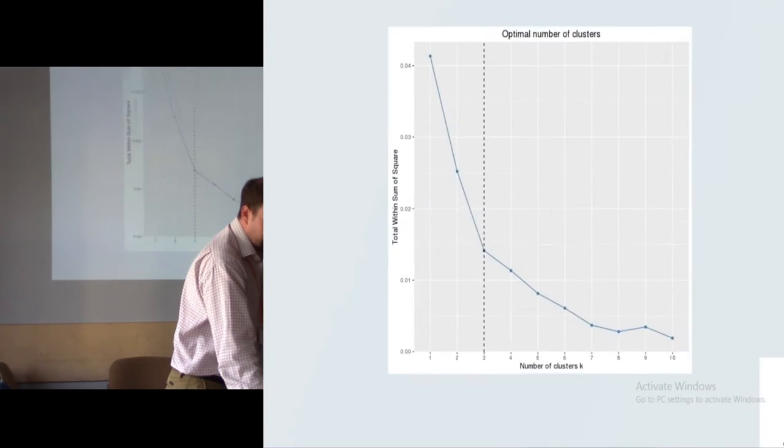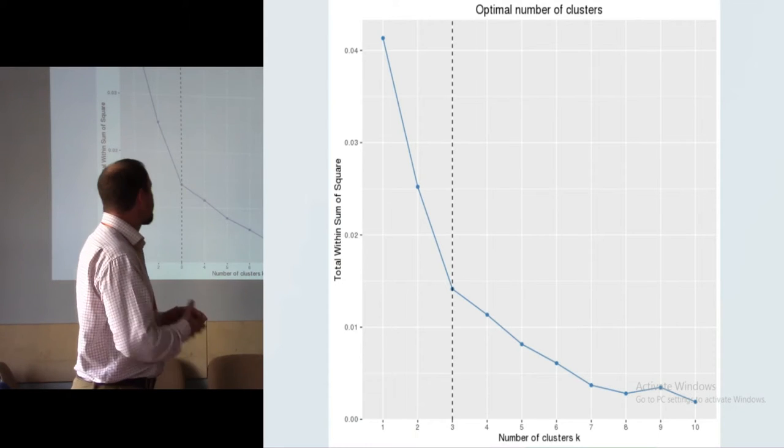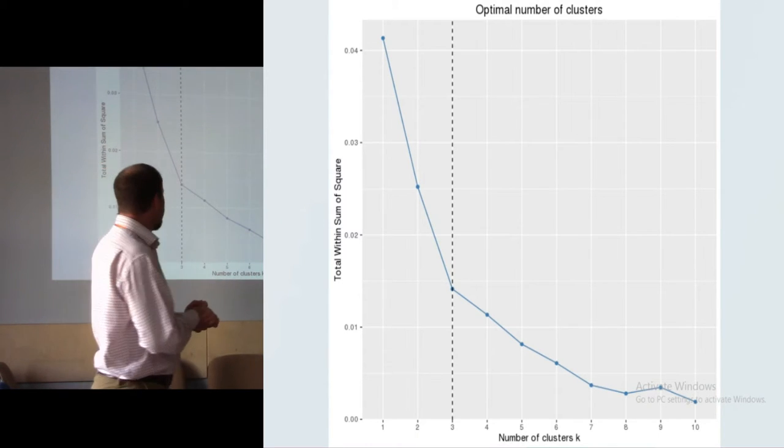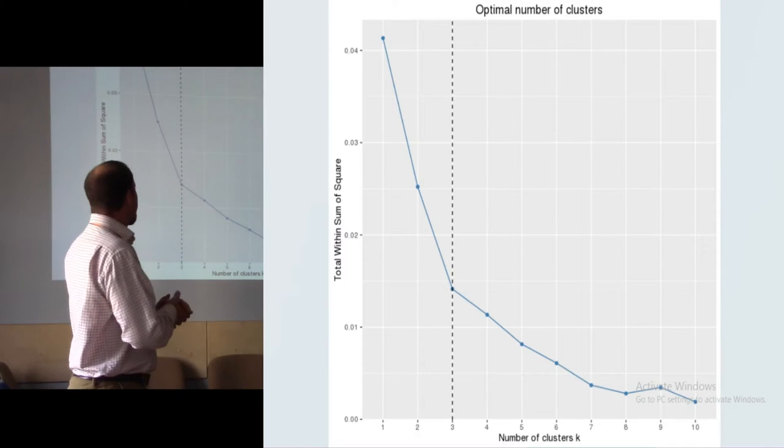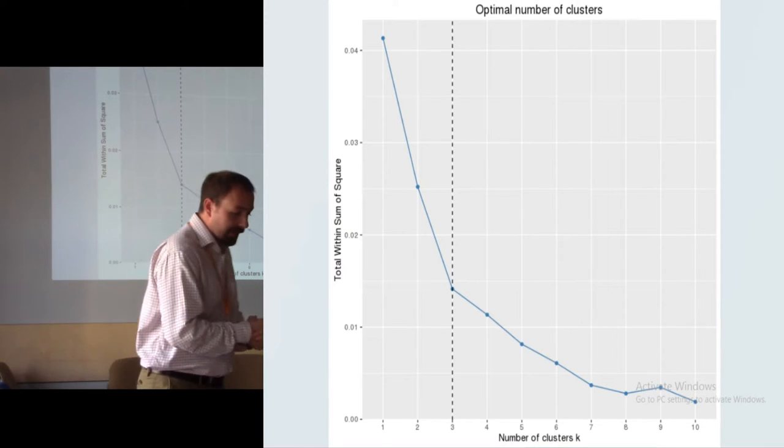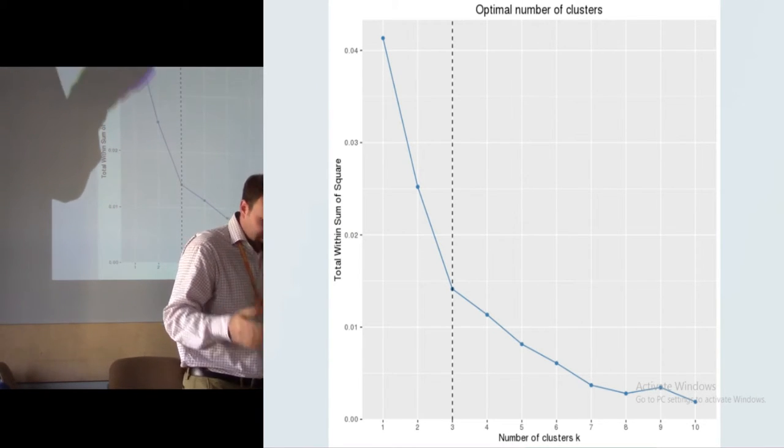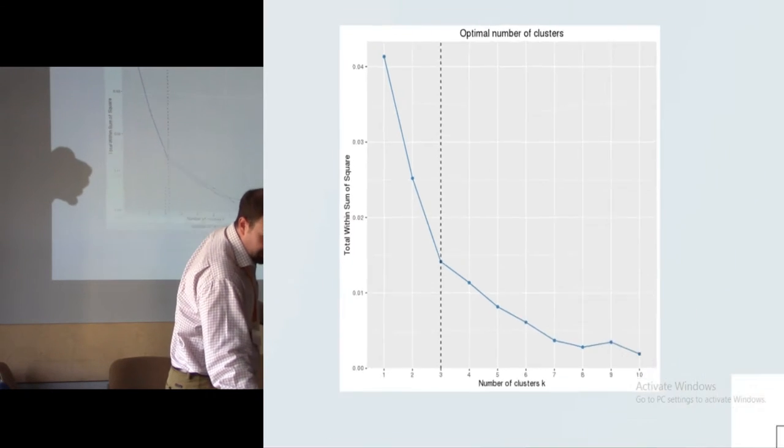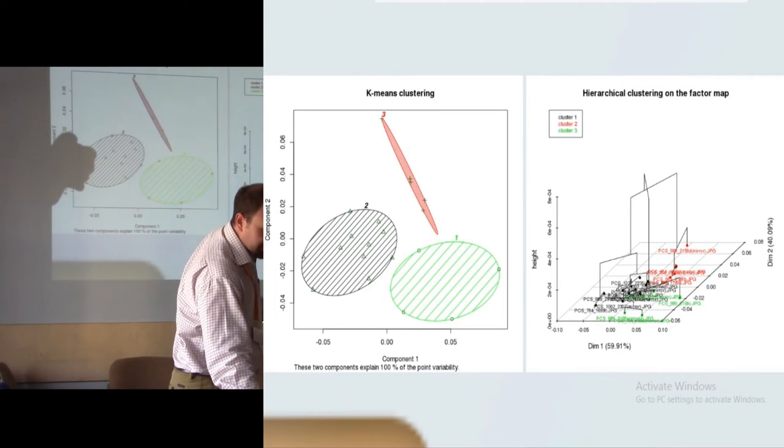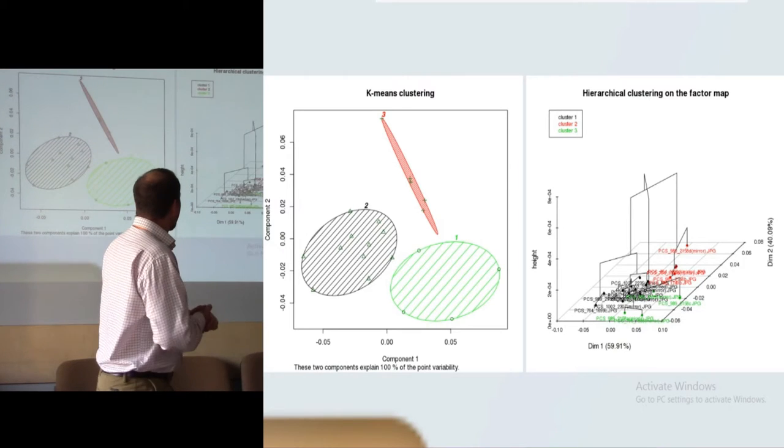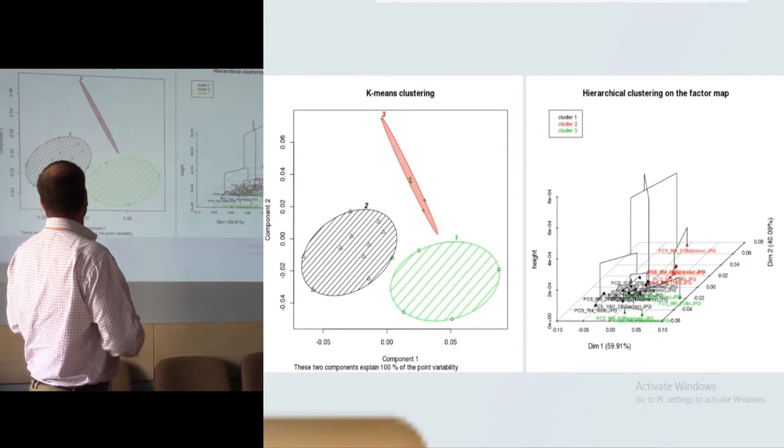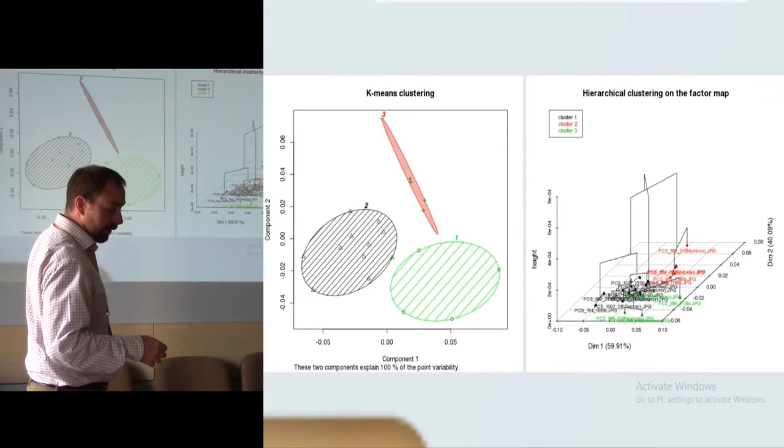For this separation, I use the K-means partitioning, the total within sum of square elbow method. This recommends three different groups for me. This is the result of the K-means partitioning on the basis of the PC loadings.